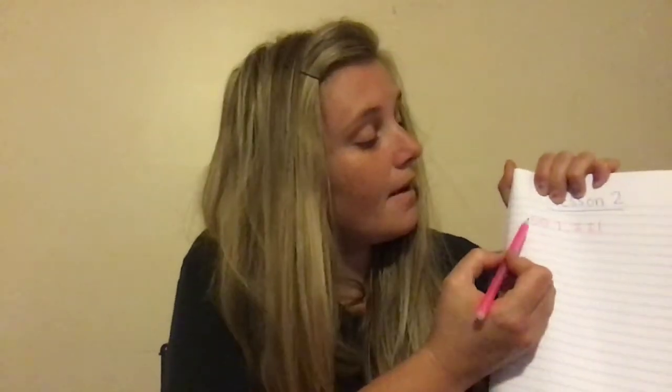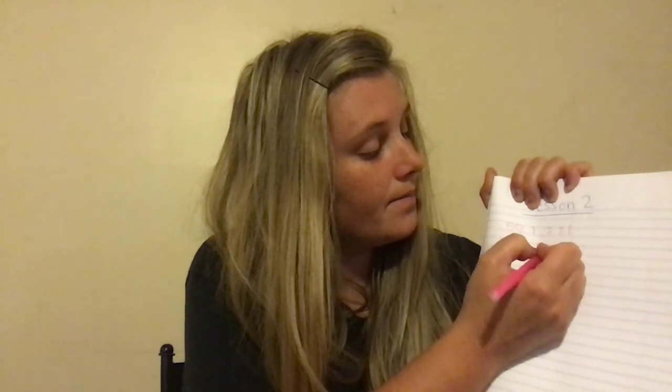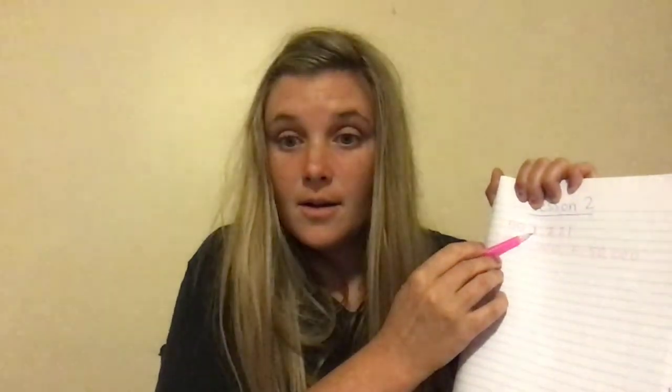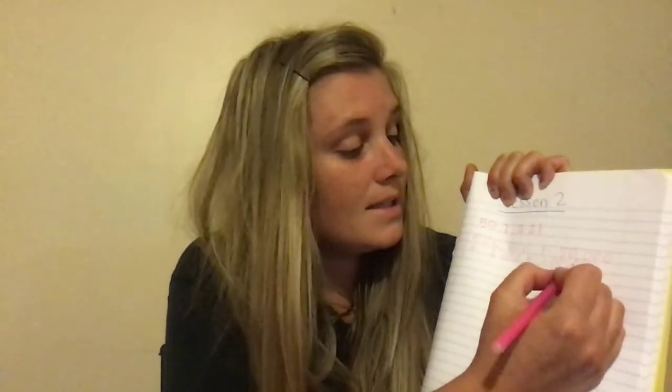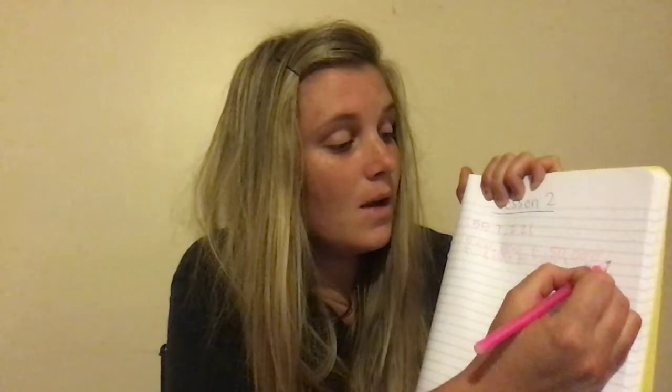Expanded — do you remember how to do expanded? Let's look at our number. We put a comma here. Our number is 557,221. We're going to write this in expanded form: five hundred thousand, plus fifty thousand, plus seven thousand, plus two hundred, plus twenty, plus one. That is expanded form.